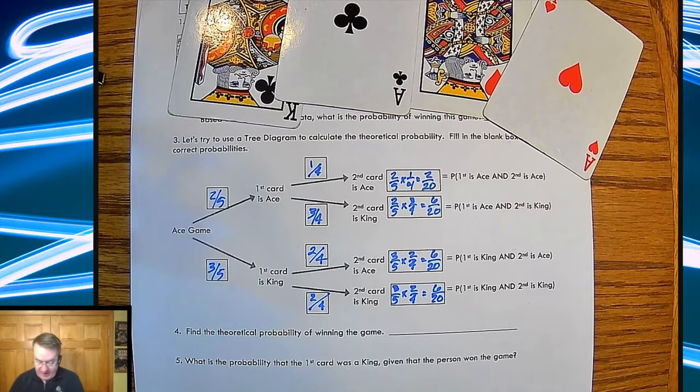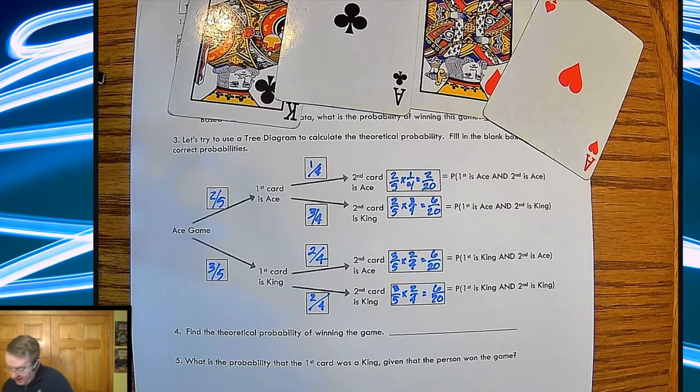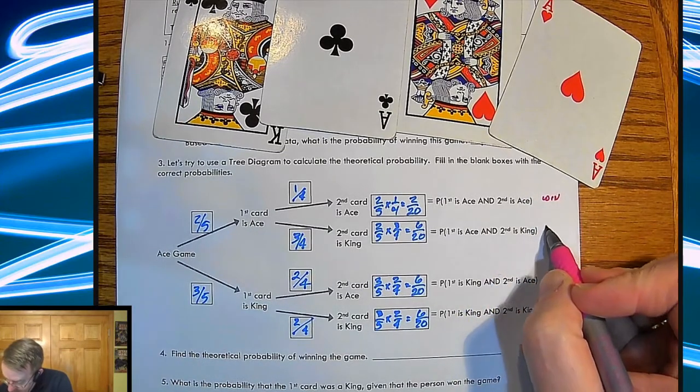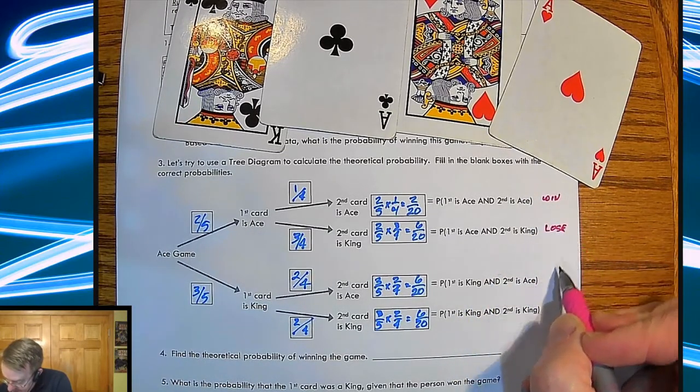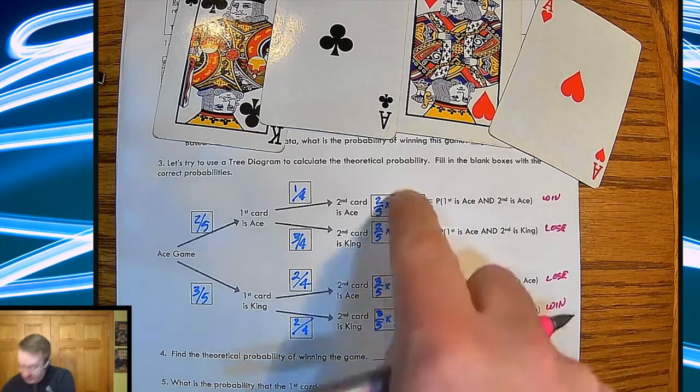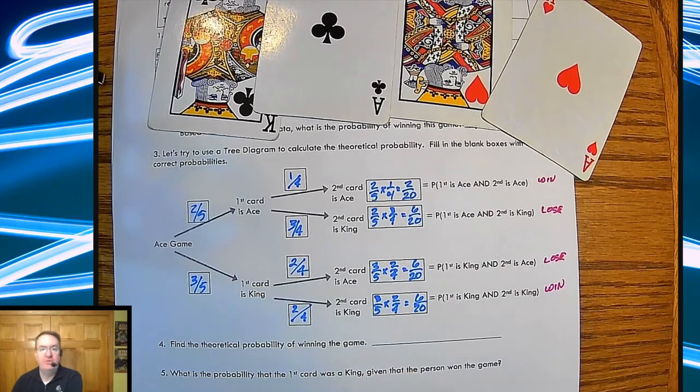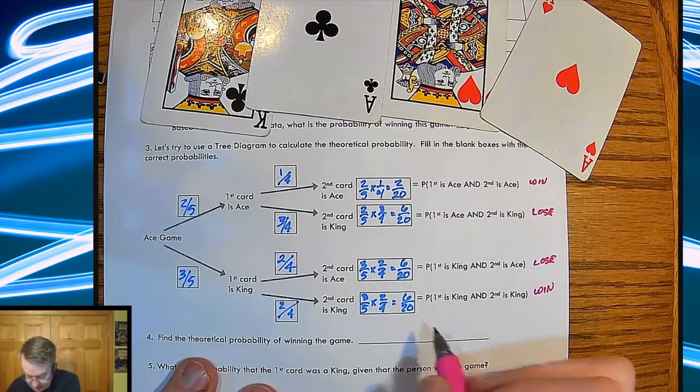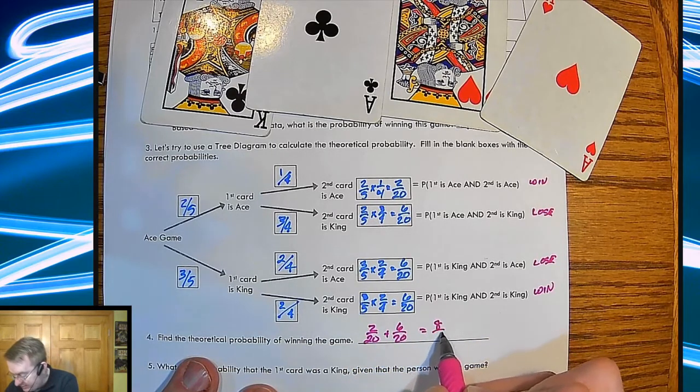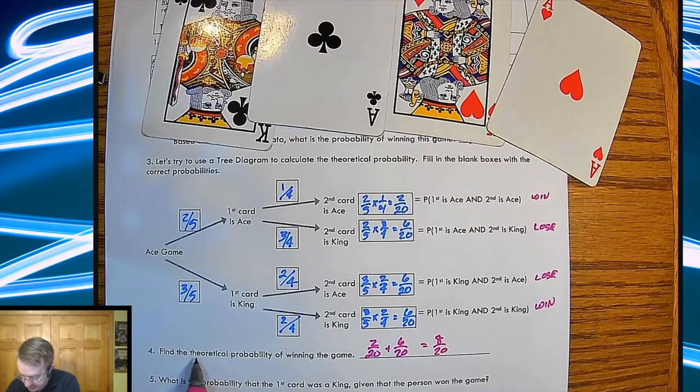All right, so find the theoretical probability of winning the game. Which two are going to give you the wins? The wins are going to come here. So win, lose, lose, win. These are all independent, so we can just add them up, we don't have to worry about an intersection. And so because of that, I'm going to get two out of twenty plus six out of twenty.